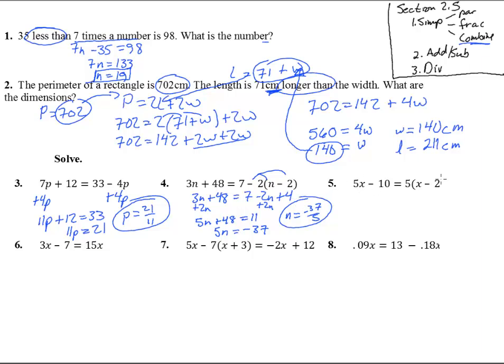Number five. 5X minus 10 equals 5 times X minus 10. Combine the X's together. We get negative 10 equals negative 10. That always happens. So it is all numbers. This is always true no matter what we do for X.